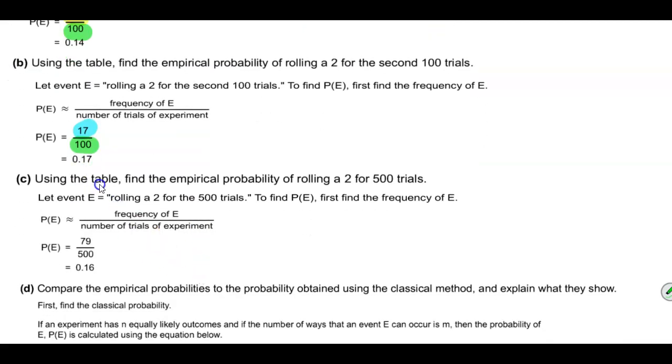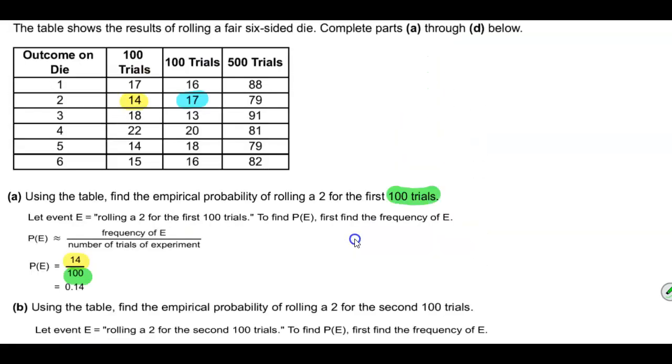Now part C says using the table, find the empirical probability of rolling a two for 500 trials. So if we're rolling a two, we're looking at column two. And for the first 500 trials, that number is represented by 79.